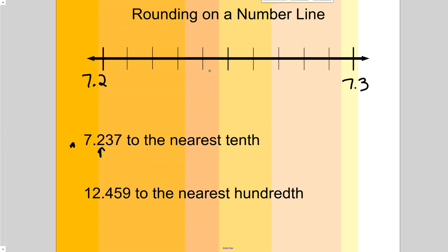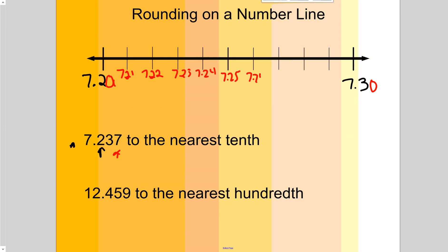Right in the middle would be seven and twenty-five hundredths. We can really think of the endpoints as seven and twenty hundredths and seven and thirty hundredths. Since we're going out to the thousandths, I could put another zero on each end, but I don't have enough space. In between, we have seven and twenty-one, twenty-two, twenty-three, twenty-four, twenty-five hundredths, and so on.